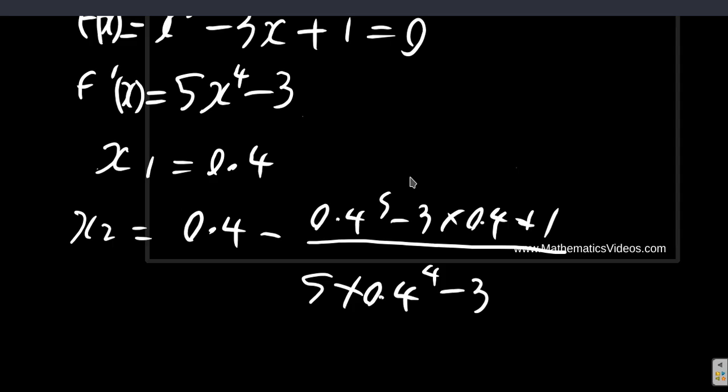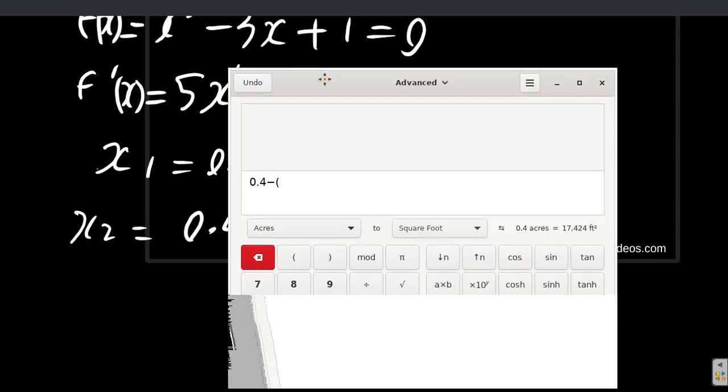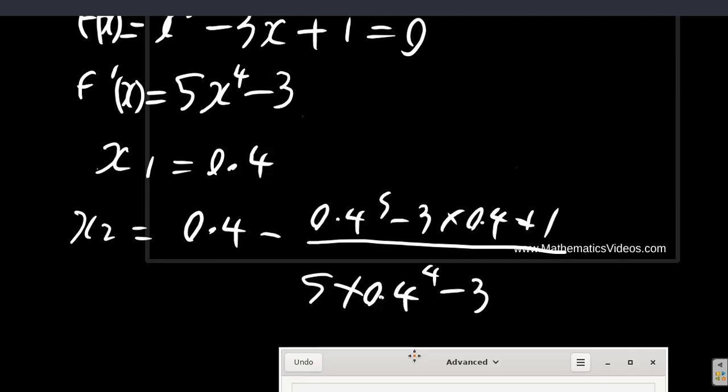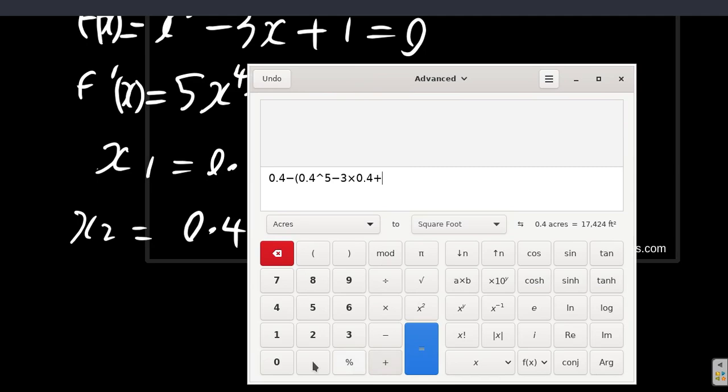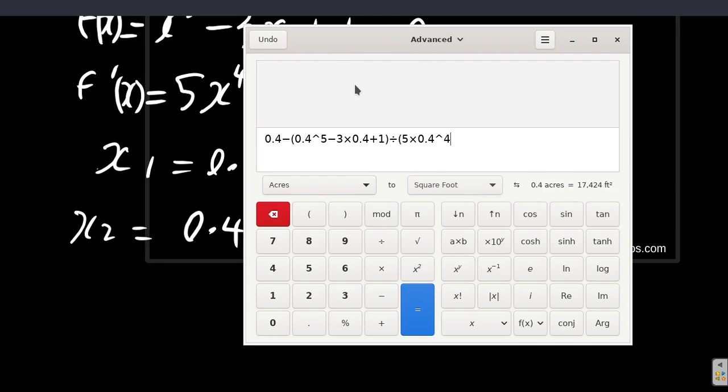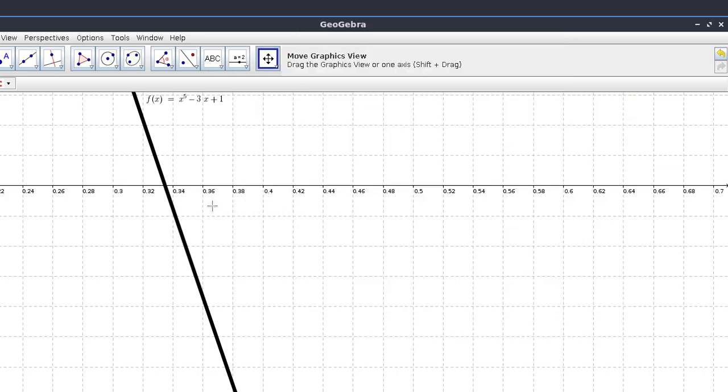We have 0.4 minus 0.4 to the 5th, 0.4 to the power of 5 minus 3 times 0.4 plus 1, close bracket, over open bracket, 5 times 0.4 to the 4th, 5 times 0.4 to the power of 4 minus 3, close bracket, equal. So it's 0.3. So you see?